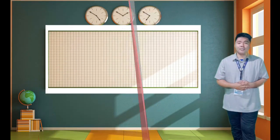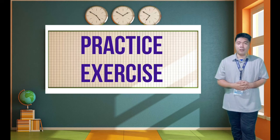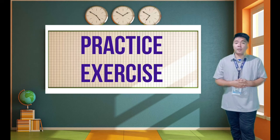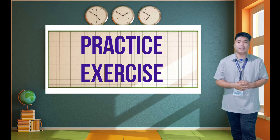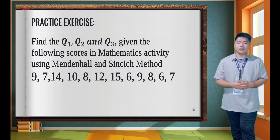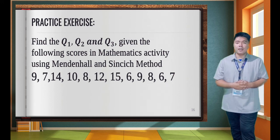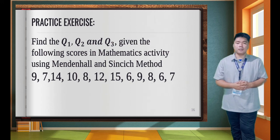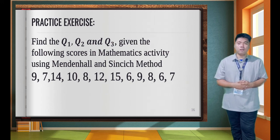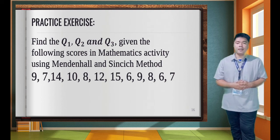To assess your understanding, here is a practice exercise. Find Q1, Q2, and Q3 for the following scores in a mathematics activity using the Mendenhall and Sincich method. The data are: 9, 7, 14, 10, 8, 12, 15, 6, 9, 8, 6, and 7.